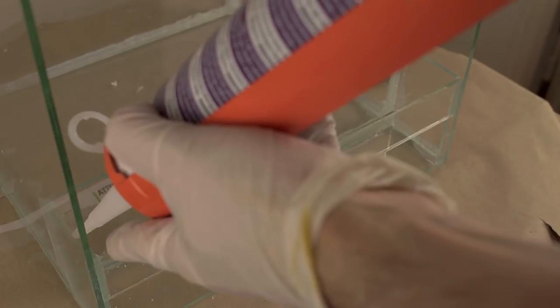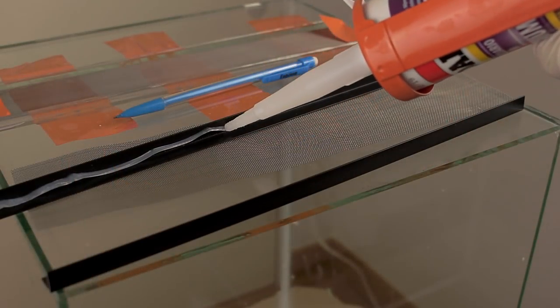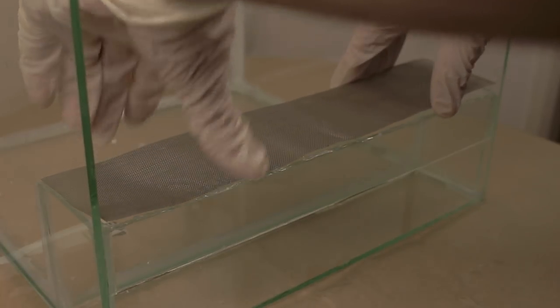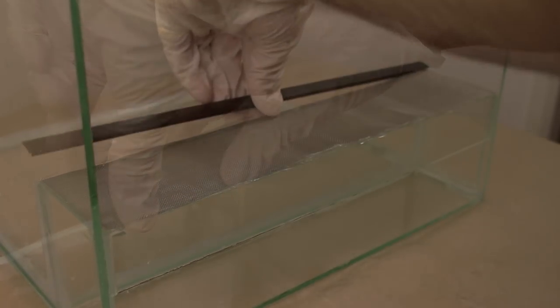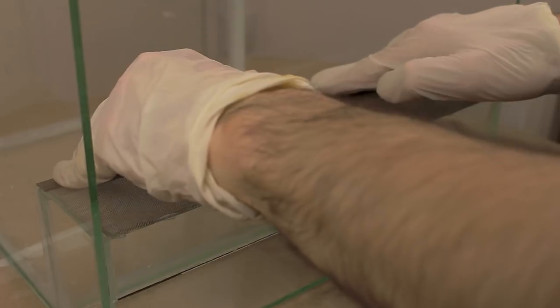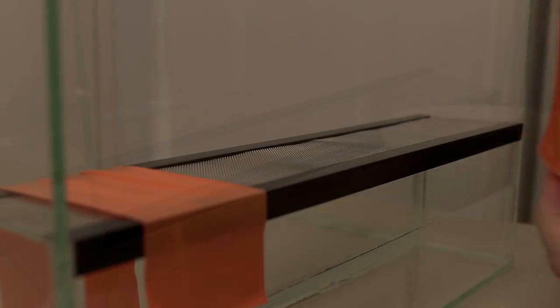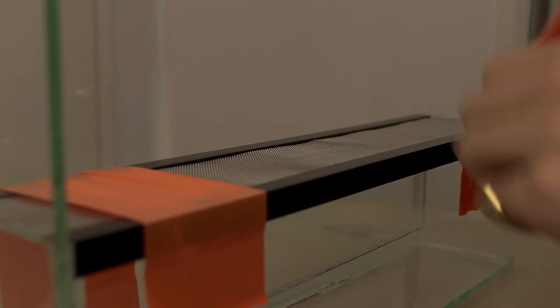I degrease again the glass and I bond areas which will be in contact with the mesh. Then I bond my PVC profile on the wall length with a tiny amount of sealant. Now I can place my mesh and surround it with profiles. I use the tape again to keep the grid in place and I let dry during 24 hours.